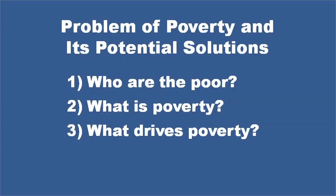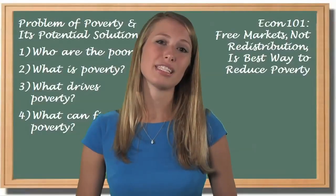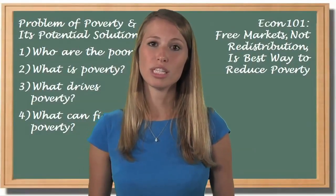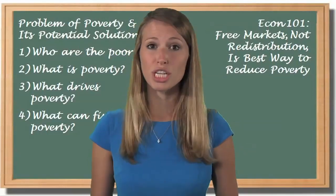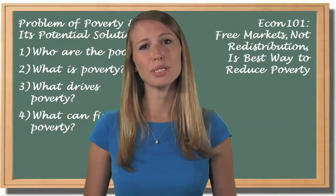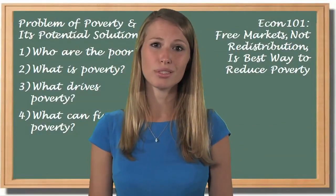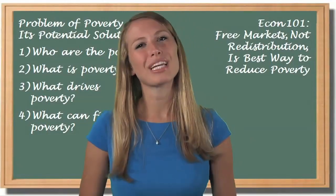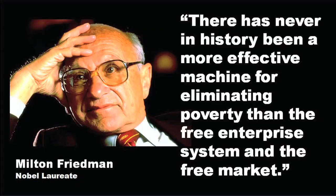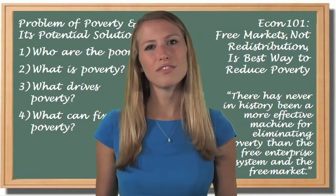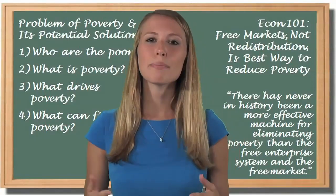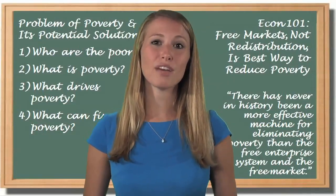This brings us to the fourth and final question: what can fix poverty? Sadly, poverty in the United States has become a vicious cycle. Generations of families have suffered from not just physical poverty, but a poverty of spirit that discourages them from working hard toward changing their own lives. But even this spiritual poverty is supported and not solved by government handouts. There is hope for breaking this cycle. As the economist Milton Friedman said, there has never in history been a more effective machine for eliminating poverty than the free enterprise system and the free market. What makes America great is not our long list of federal means-tested welfare programs, but our historical appreciation for the economic liberty of all people.